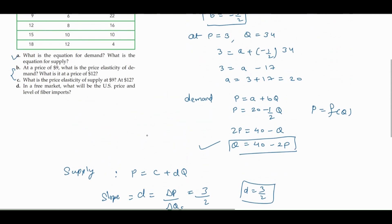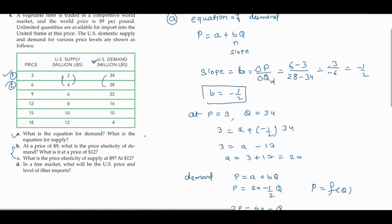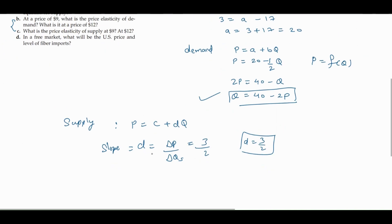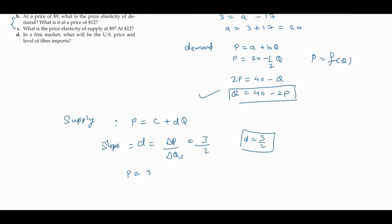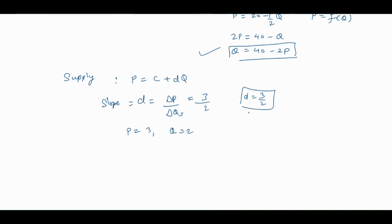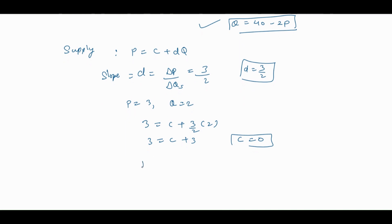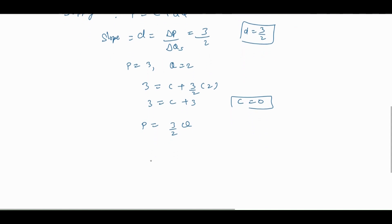Now we have to find the intercept c. We can use any data point — here p equals 3 and q equals 2. Putting into the equation: 3 equals c plus (3/2) times 2, which gives 3 equals c plus 3, so c equals 0. Therefore the supply curve is p equals (3/2)q.